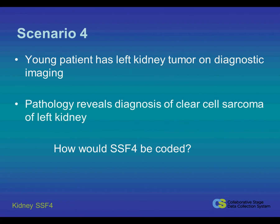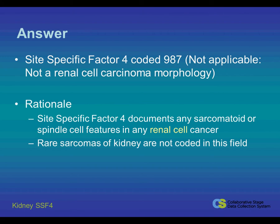In this scenario, a young patient has a left kidney tumor on diagnostic imaging. The pathology reveals a diagnosis of clear cell sarcoma of the left kidney. CITESWIC Factor IV should be coded to 987 — not applicable, not a renal cell carcinoma morphology. CITESWIC Factor IV documents sarcomatoid or spindle cell features in renal cell carcinoma only. Rare sarcomas of the kidney should not be coded in this field.